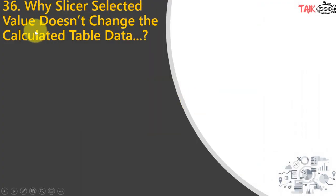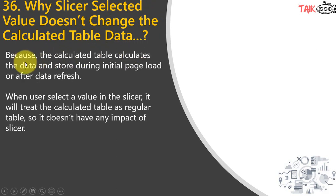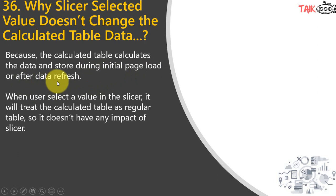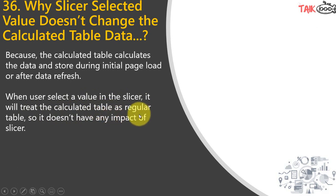Why does a slicer's selected value not change the calculated data table? Because the calculated table calculates and stores its data during the initial page load or after a data refresh. When a user selects a value in the slicer, it treats the calculated table as a regular table, so the slicer has no impact on it.